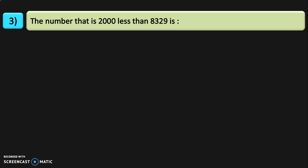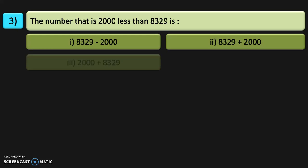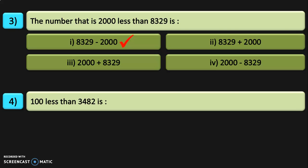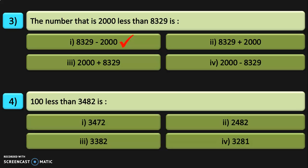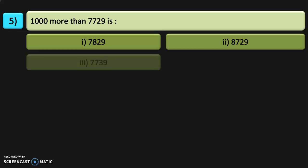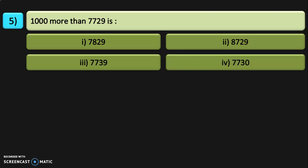Next: the number that is 2,000 less than 8,329 is 8,329 minus 2,000. Then, 100 less than 3,482: look at the hundreds place where you have 4. 100 less means 4 minus 1 is 3, so the answer is 3,382. For 1,000 more than 7,729: look at the thousands place where you have 7. 7 plus 1 gives 8,729, which is the correct answer.